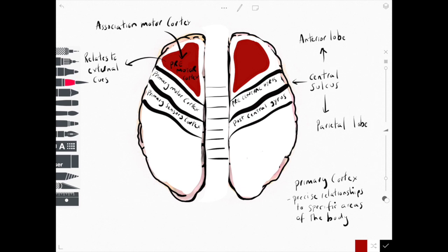Sitting in the parietal lobe now, coming in as a green color, is the association sensory cortex.